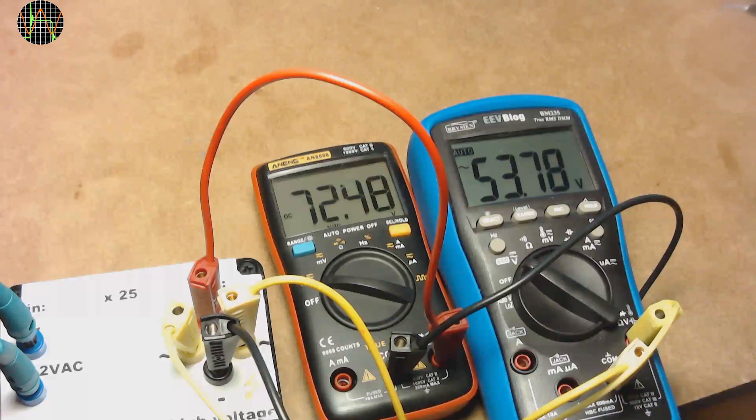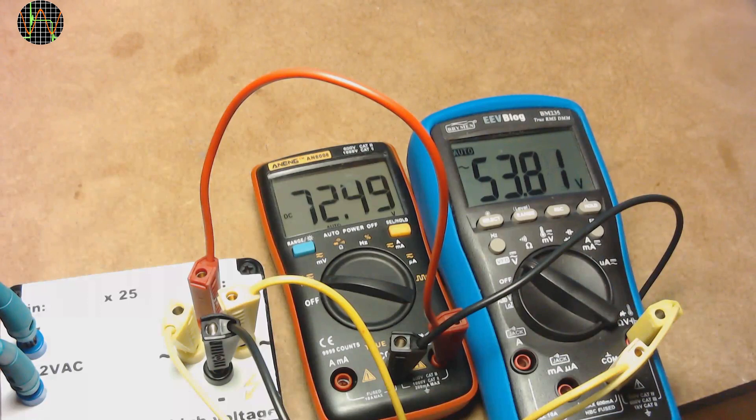For higher AC and DC voltages, I use this little test box that can produce some serious voltages. I am probably going to cover this box in another video. The red multimeter reads the DC voltage on the red and black test leads and the blue one, the AC voltage, on the yellow test leads.